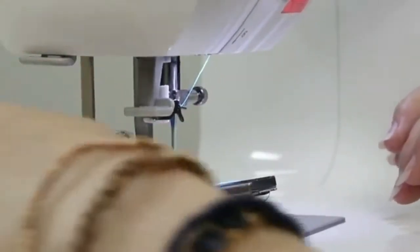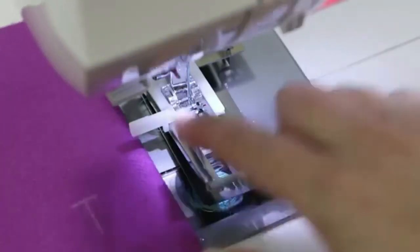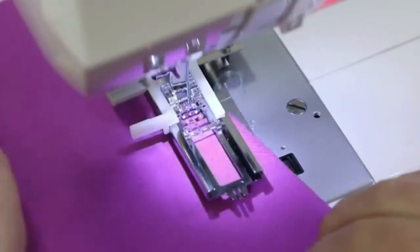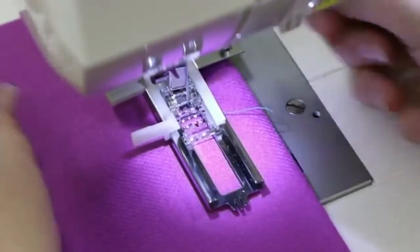Then lower the buttonhole lever between the two white pieces. Take your fabric and line the top part of your marking so that it's in this hole. Lower the presser foot and begin sewing.